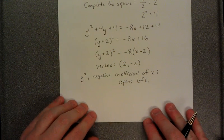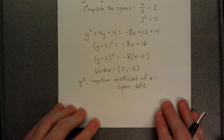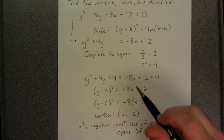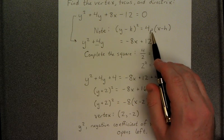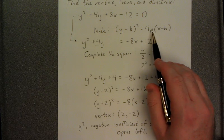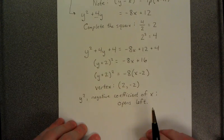Now the other piece of information that we need here is the value of p. We'll notice from our note up here that the coefficient of our x minus h is supposed to be 4p, or in this case, negative 4p. p represents a distance, and so p is supposed to be a positive value.